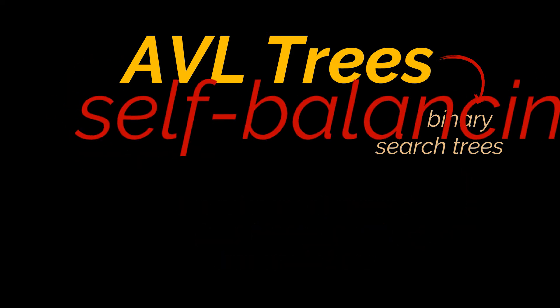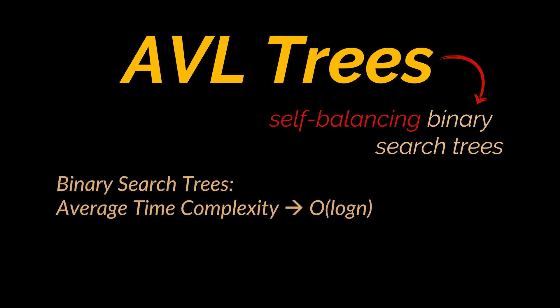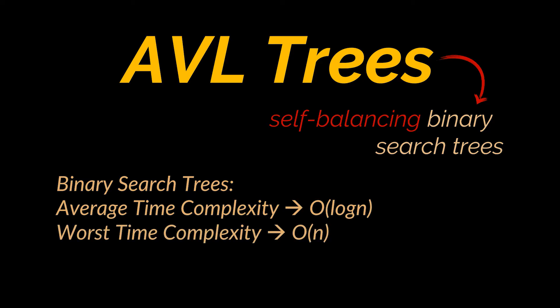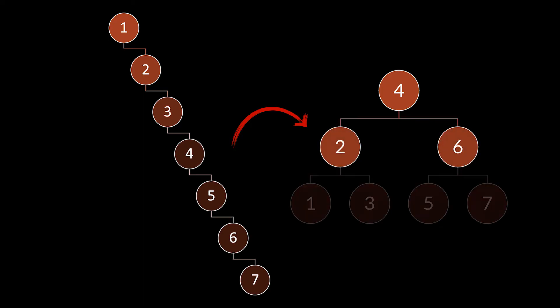The main difference is that AVL trees are self-balancing binary search trees. The problem with binary search trees is that even if the average time complexity is O(log n), we may still encounter cases where this degrades to O(n). What AVL trees do to tackle this is make sure every time we insert or delete a node from the tree, the tree remains balanced. This is done by rotating or rearranging the nodes.